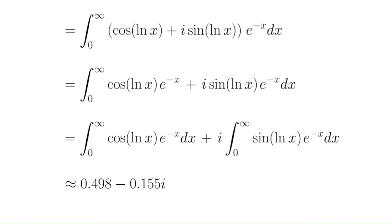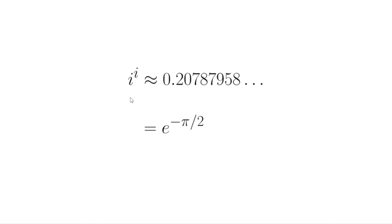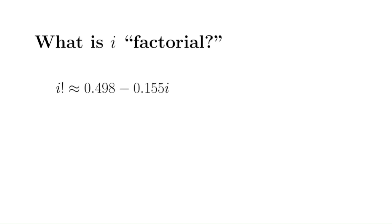Sometimes with complex numbers we do get nice closed forms. For example, i to the power of i is about 0.207, and it does have a nice closed form: it's e to the negative pi over 2. Thank you for watching — please like the video if you enjoyed it, and stay tuned for more videos like this.